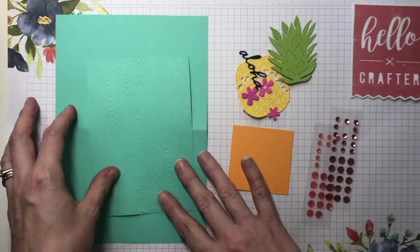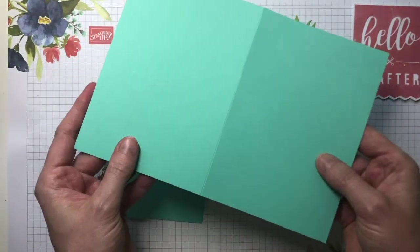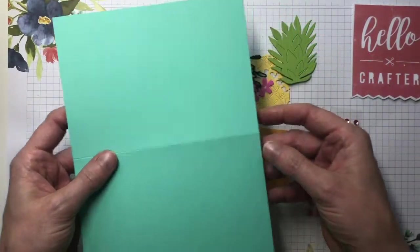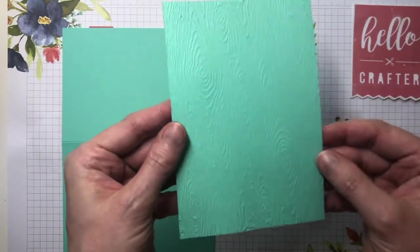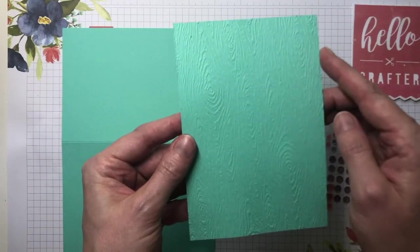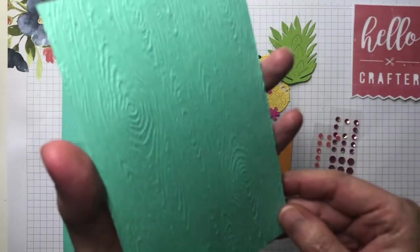So these are the items that you will get in your kit. We've got our standard card base which is A5 folded in half in Coastal Cabana, and we have a panel of Coastal Cabana cardstock that measures 10 centimeters by 14.3 and I've actually pre-embossed this for you.